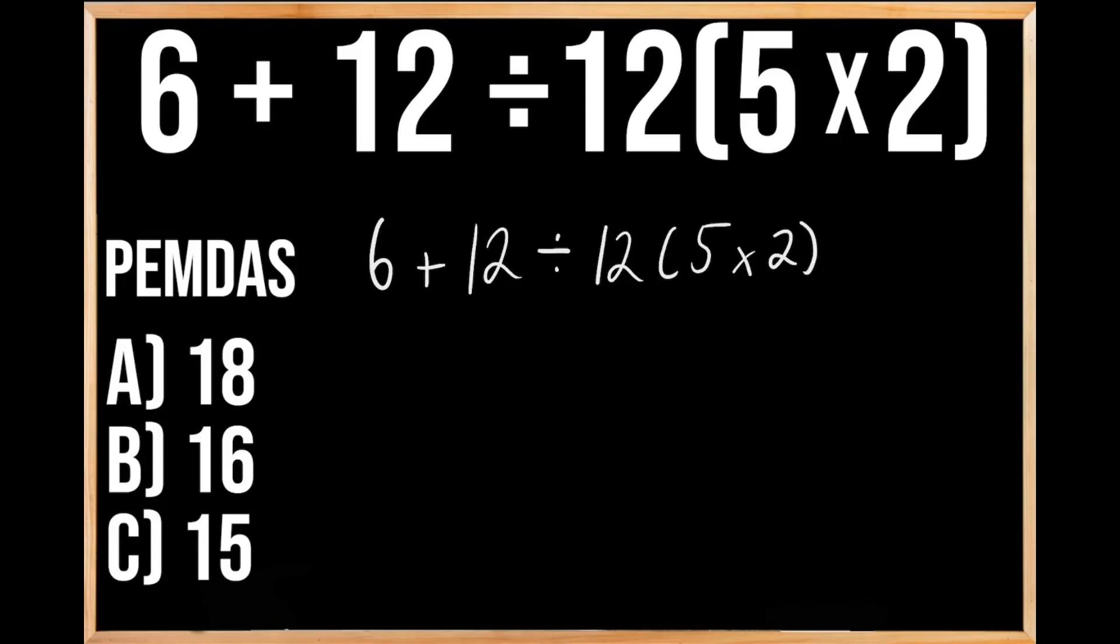When solving problems like this, it might look simple because you think you could just work from left to right and add 6 plus 12 and keep working through to get the correct answer. But that would not be the case because you need to follow the order of operations. Anytime you have a problem with multiple operations, you need to make sure you're following the order of operations.